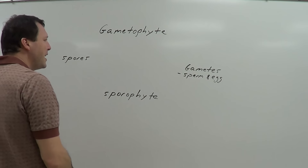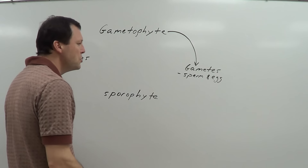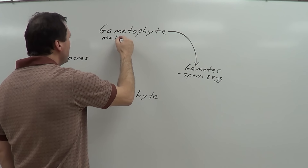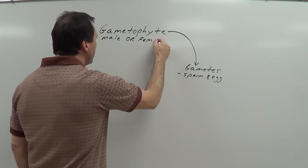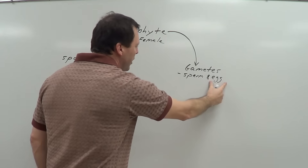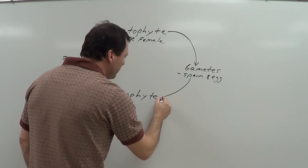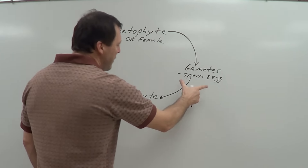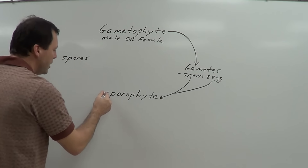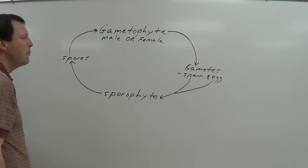Now let's connect things up. The gametophyte is going to give rise to gametes — sperm and egg. The gametophyte can be male or female: a male gametophyte produces sperm and a female gametophyte produces egg. The gametes come together — a sperm and an egg — to produce a sporophyte. Then the sporophyte produces spores, and the spores grow into a brand new gametophyte.